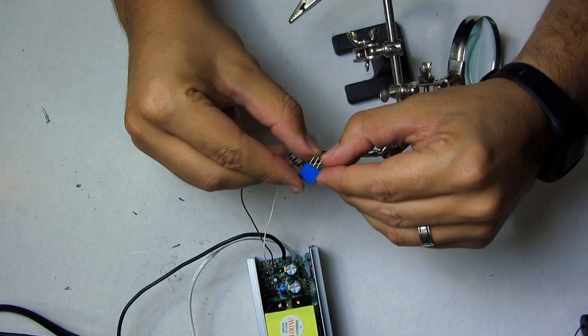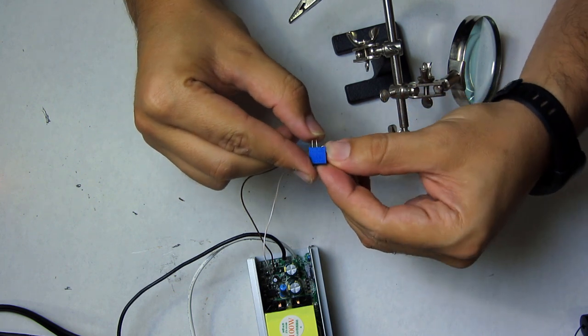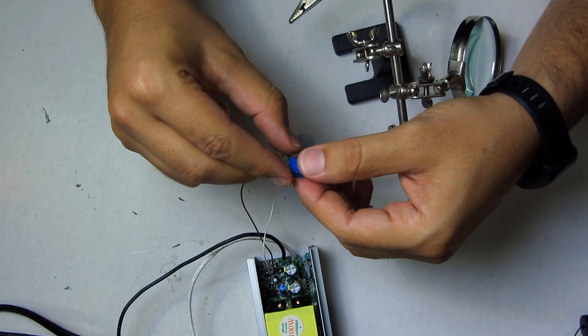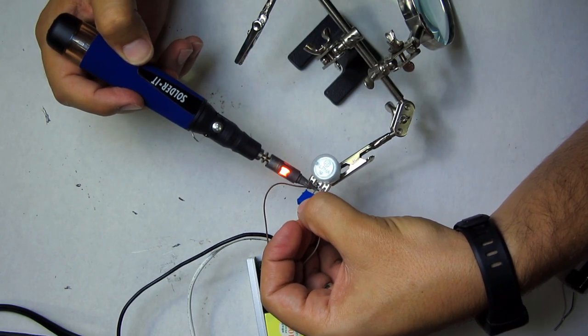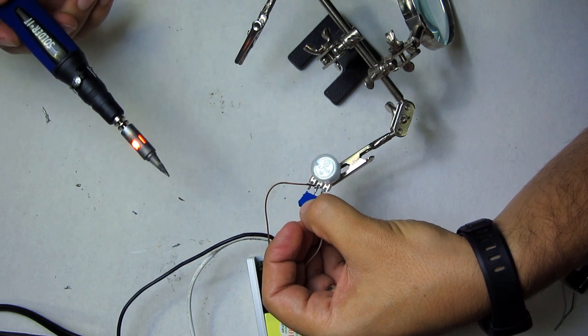Now we'll connect the trim potentiometer. Take the pin furthest from the knob and bend it right out of the way. We don't need it. The other two pins will solder to the corresponding pins on the other potentiometer. Middle to middle, outside to outside.